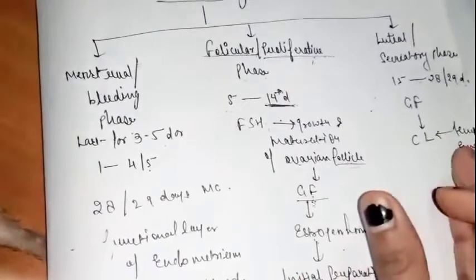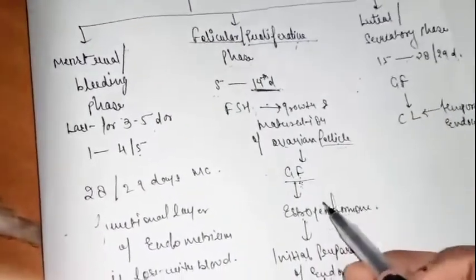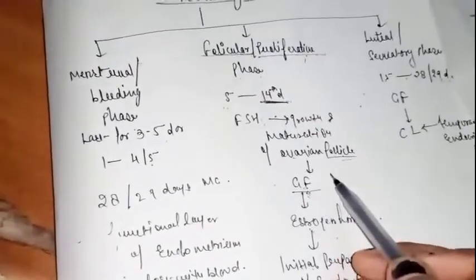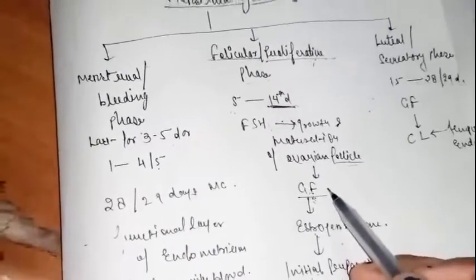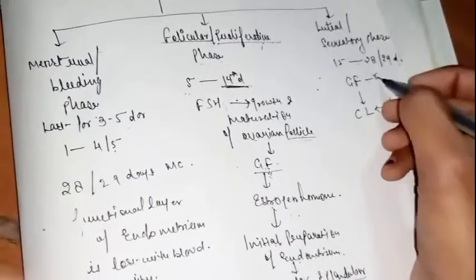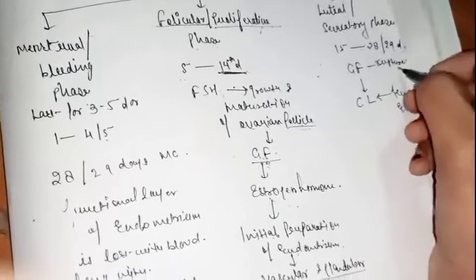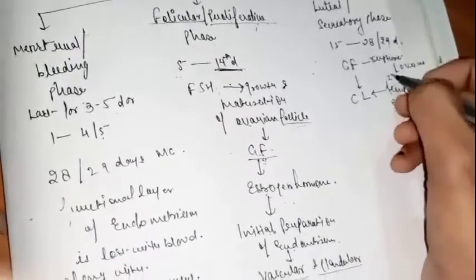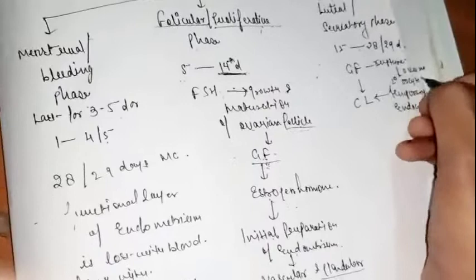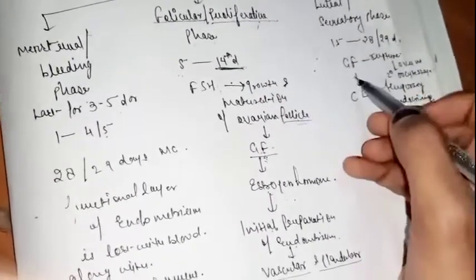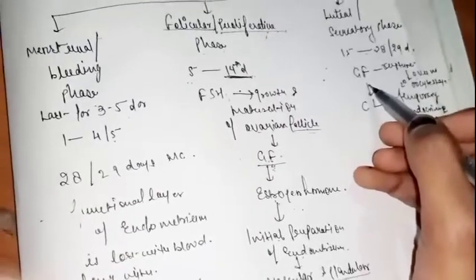During ovulation, the Graafian follicle ruptures and releases the ovum in the secondary oocyte stage. This is called ovulation, and it happens in the ovary.